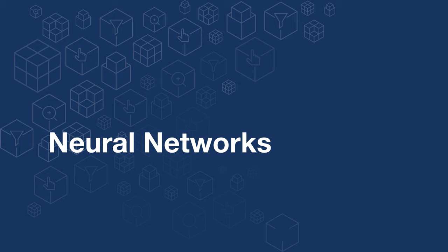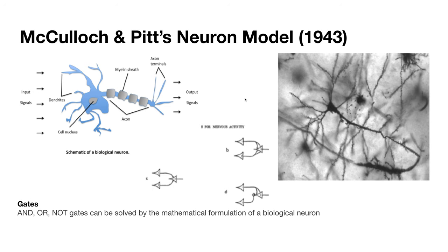Now let's talk about what neural networks are and where things started. It all started with a paper introduced by McCulloch and Pitts in 1943, where they introduced what's called the neuron model. They were inspired from biology — the biological neuron — and introduced a neuron model that could be used to solve some basic tasks, like AND, OR, or NOT gates. They provided the mathematical formulation for how to achieve that.